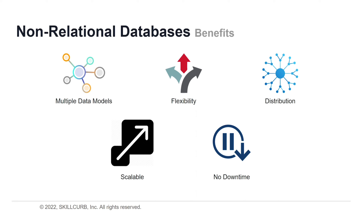Distribution capabilities: look for a NoSQL database designed to distribute data at global scale, meaning it can use multiple locations involving multiple data centers and cloud regions for write and read operations. Relational databases, by contrast, use a centralized application that is location-dependent, especially for write operations. A key advantage of a distributed database with a masterless architecture is that you can maintain continuous availability because data is distributed with multiple copies where it needs to be.